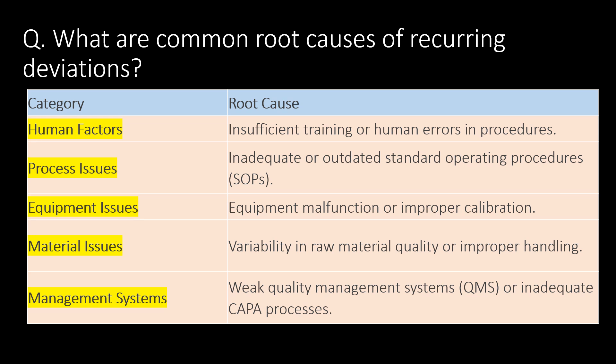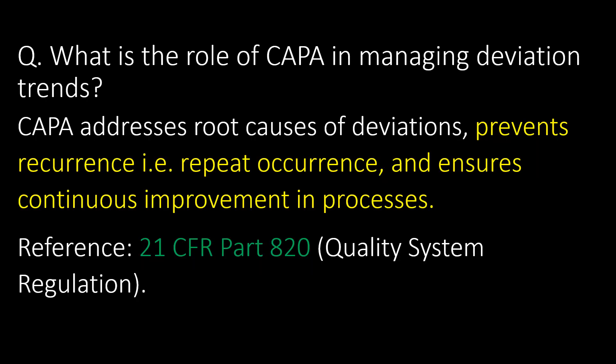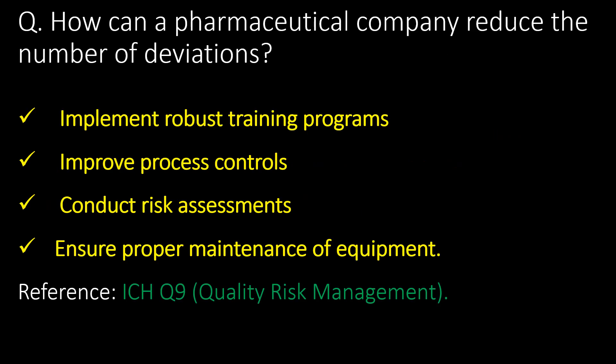Under management systems: weak QMS or inadequate CAPA processes. What is the role of CAPA in managing deviation trends? CAPA addresses root causes of deviations, preventing recurrence — that is, repeat occurrence — and ensures continuous improvement in processes. Reference: 21 CFR Part 820.